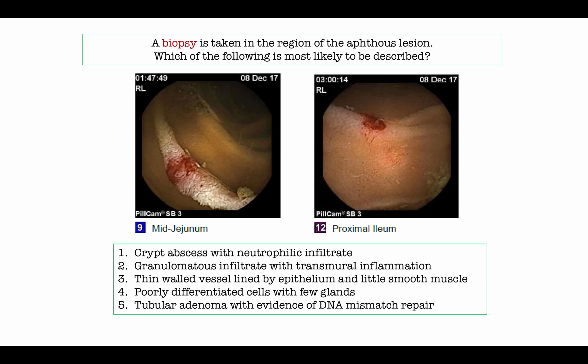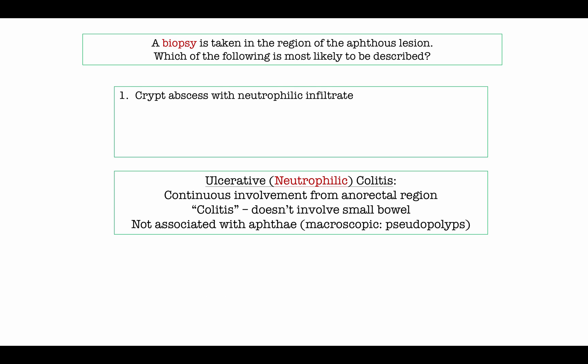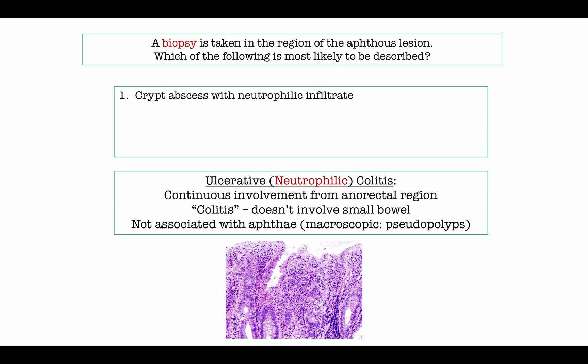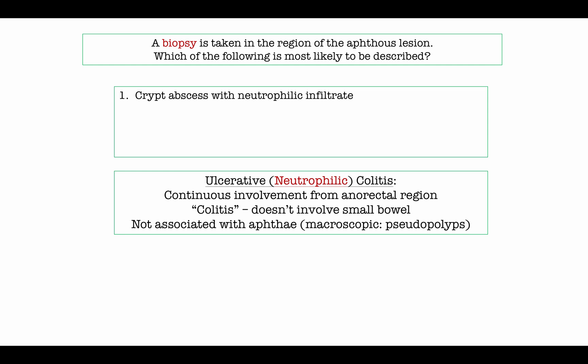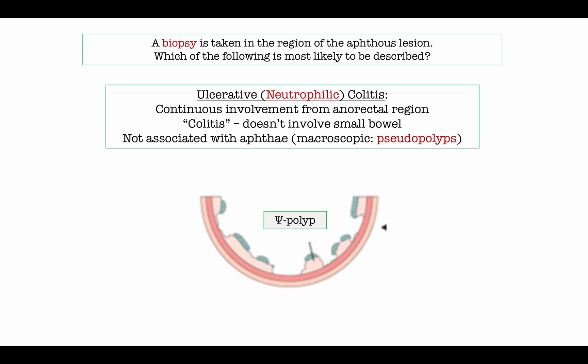In question two, they ask you to determine the pathology present if you biopsy an aphthous lesion. Choice A describes crypt abscess with neutrophilic infiltrate — the classic pathologic description of ulcerative colitis. I like to refer to it as neutrophilic colitis, distinguishing it from granulomatous colitis or Crohn's disease. Ulcerative colitis is characterized by continuous involvement spreading from the anorectal region proximally, with friable mucosa and inflammatory pseudopolyps — which are actually surviving remnants of normal mucosa surrounded by crypt abscesses.